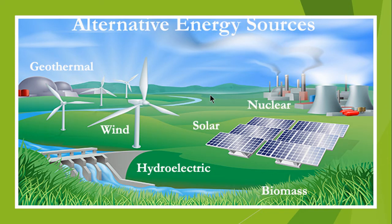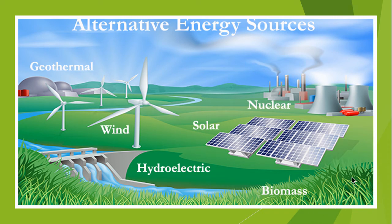The next one is solar energy, in which sunlight produces electricity when it hits the solar panels. Another form of energy we can use is biomass — by using biomass we create methane, and methane gas is burned to use it as a fuel. And the last one is nuclear energy.